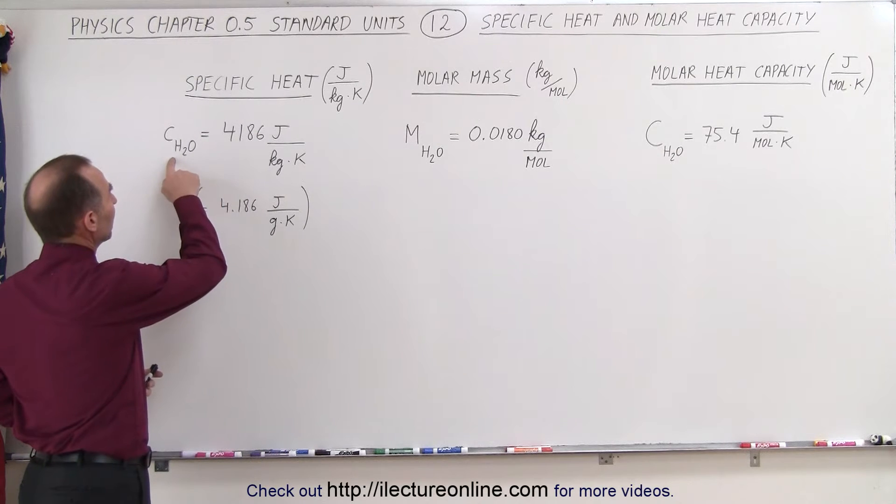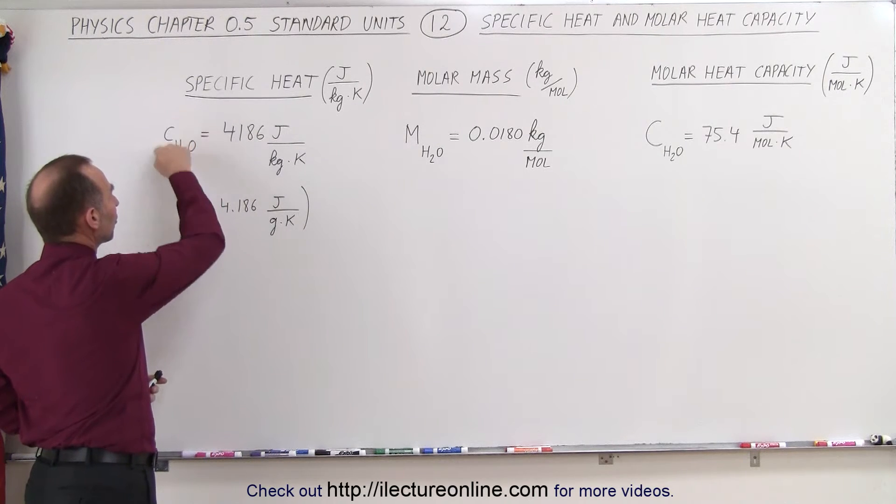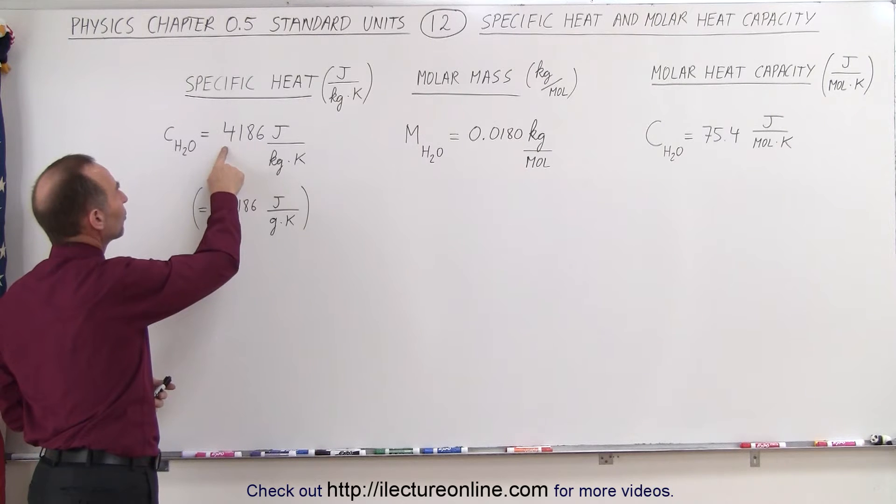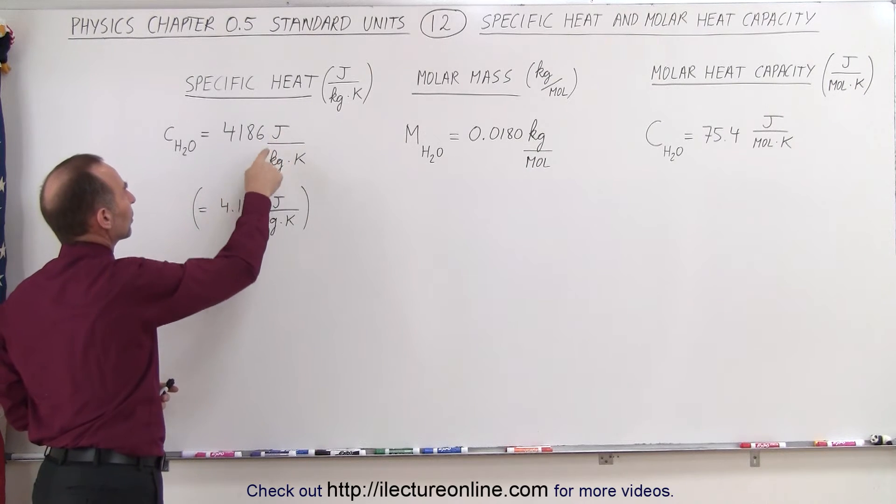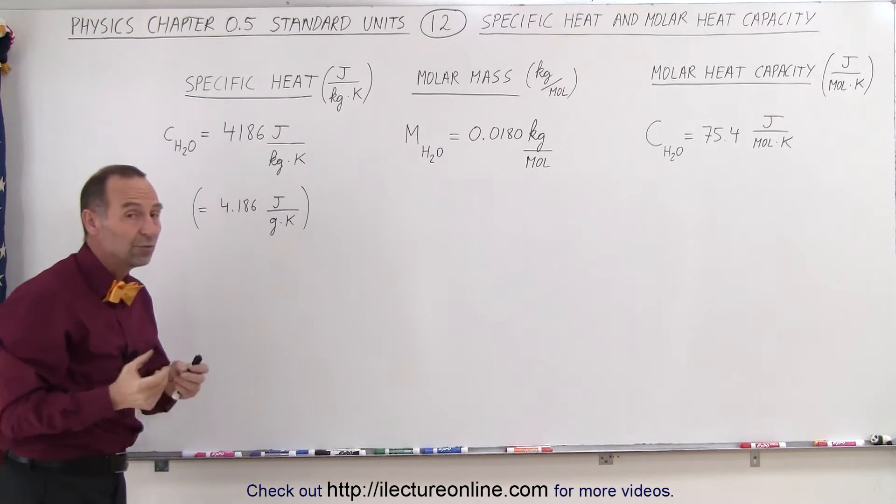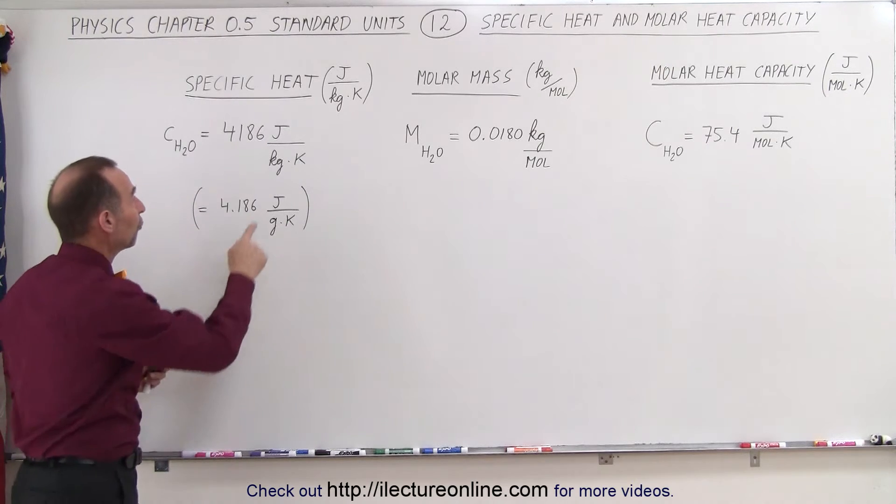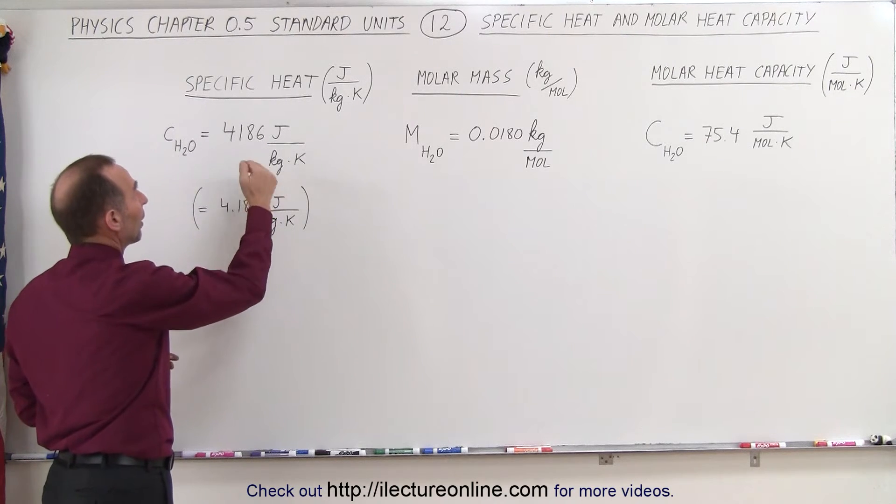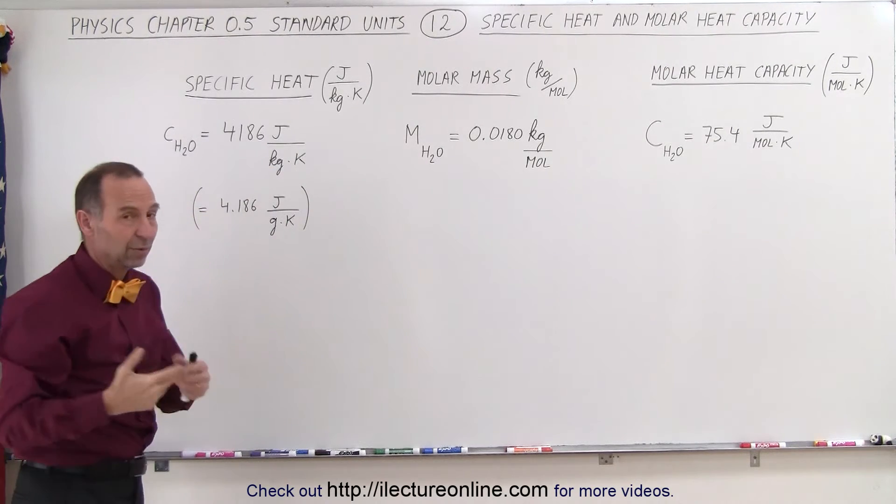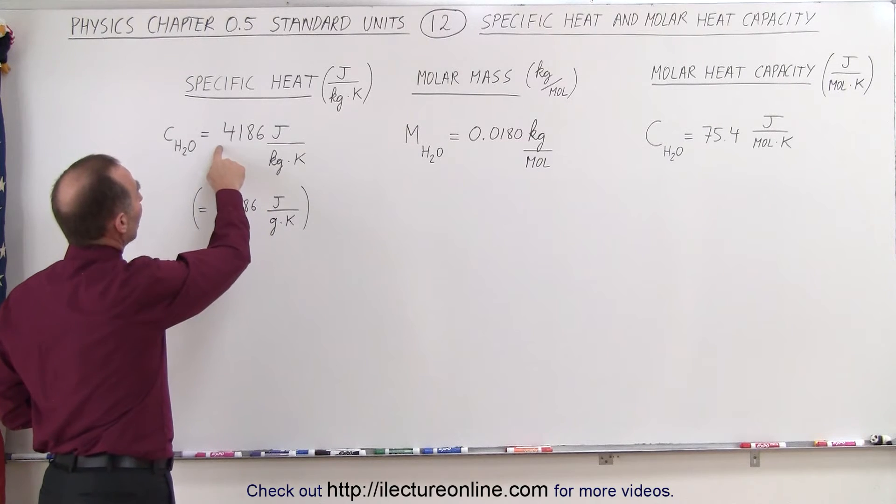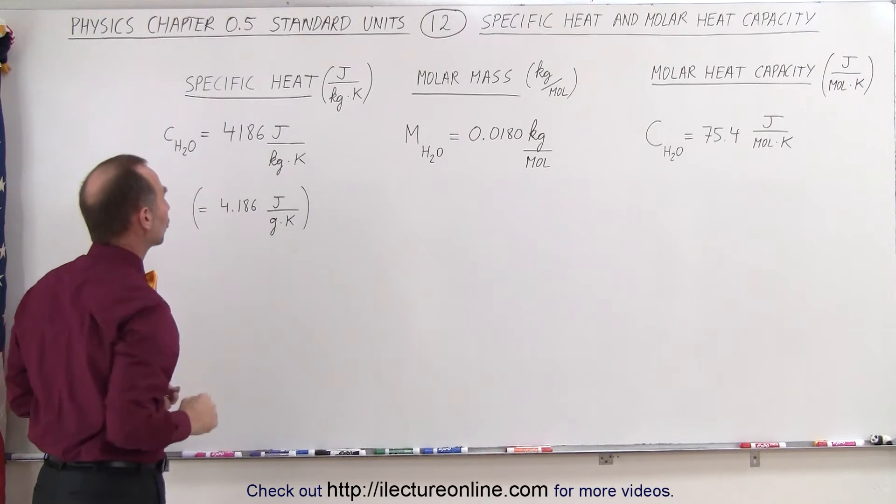In other words, the specific heat of water, indicated with a small c, is equal to 4186 joules per kilogram per kelvin, which means to raise the temperature of one kilogram of water by one degree kelvin, which is the same as one degree centigrade, it will require 4186 joules.